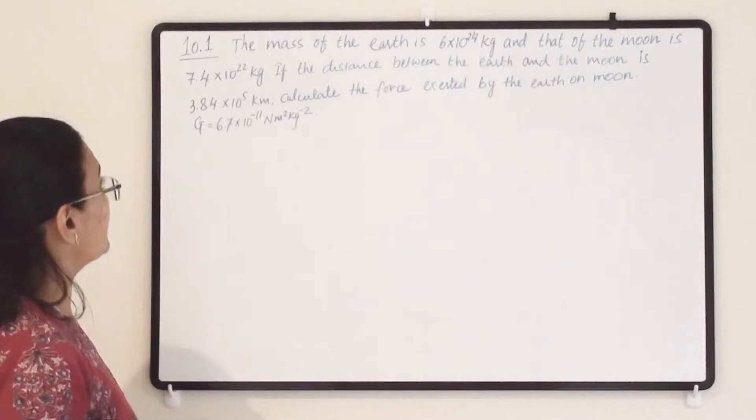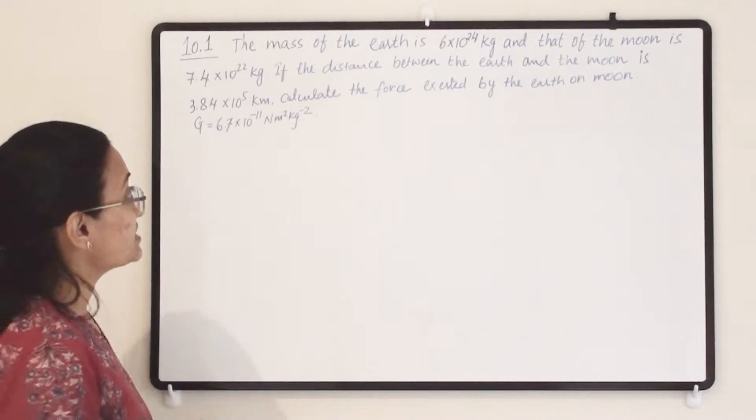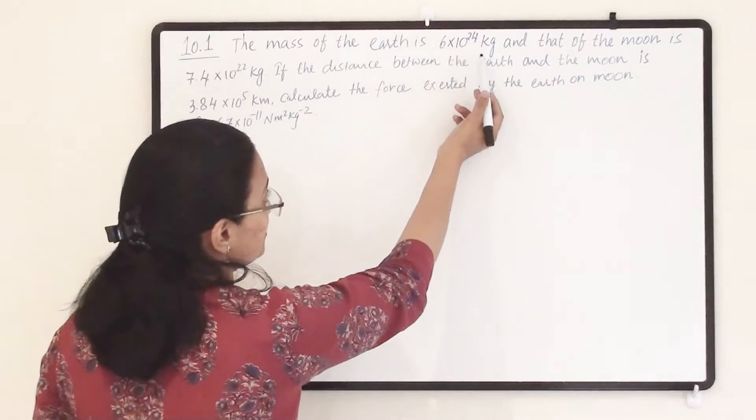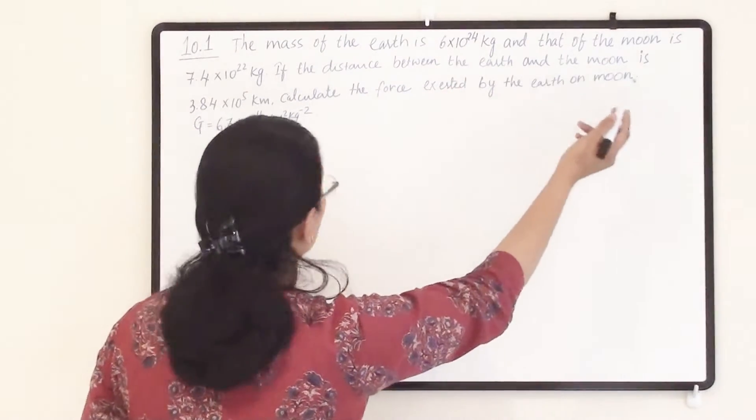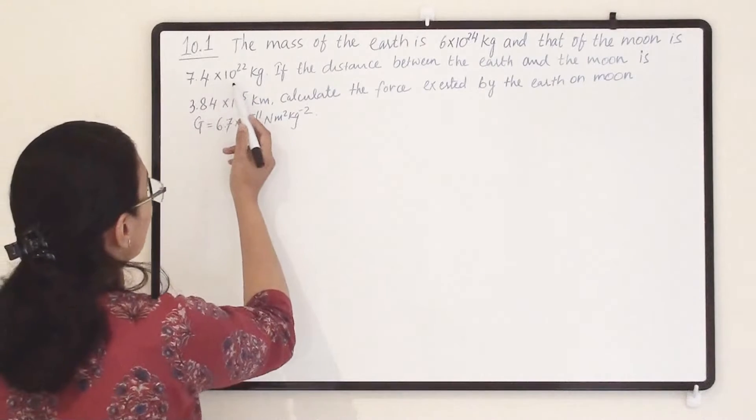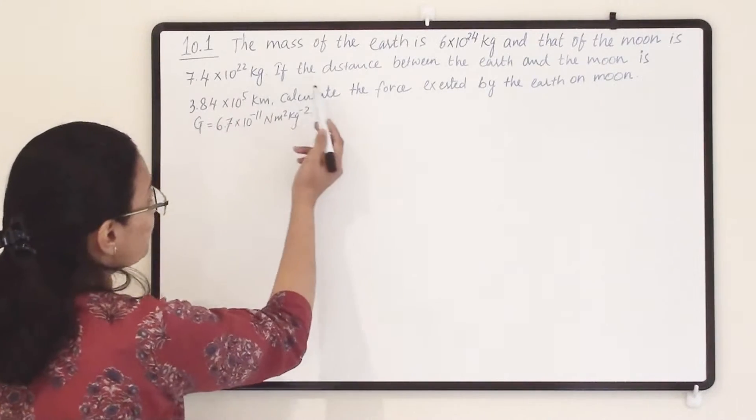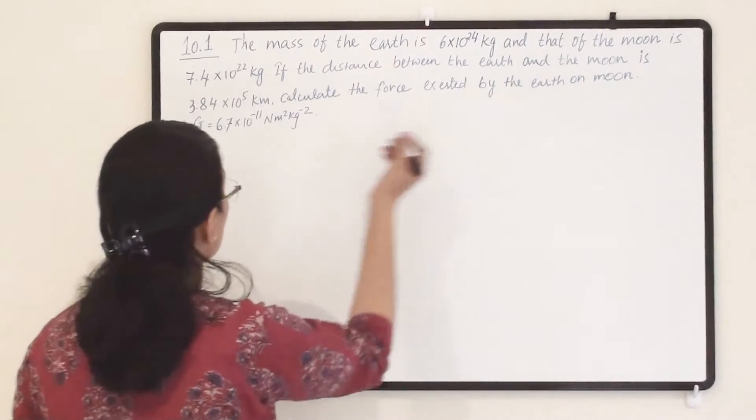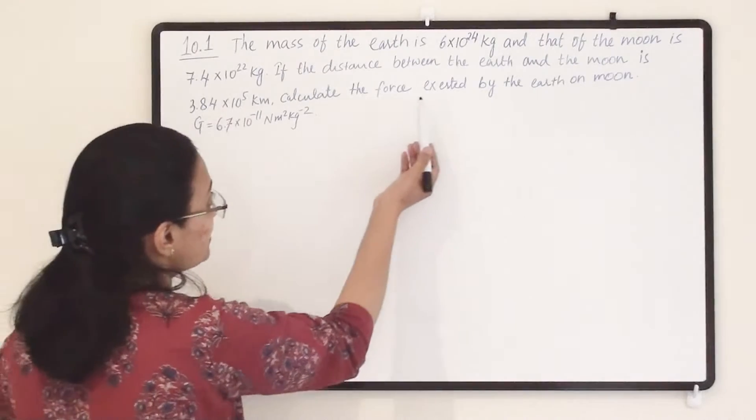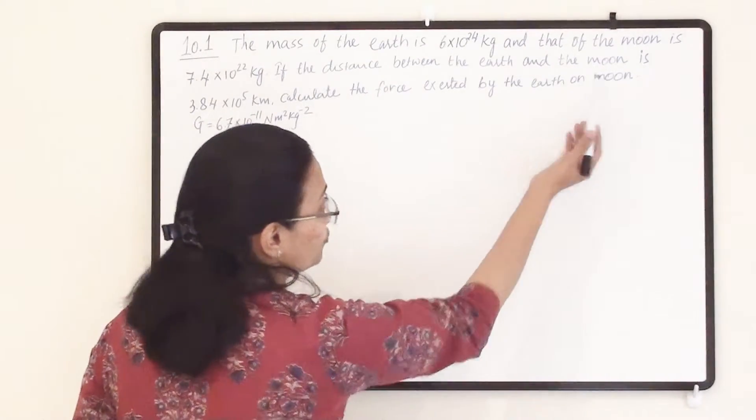This example says that the mass of the Earth is 6×10²⁴ kg and that of the moon is 7.4×10²² kg. If the distance between the Earth and moon is given, calculate the force exerted by Earth on the moon.